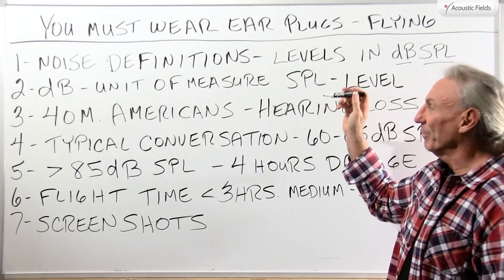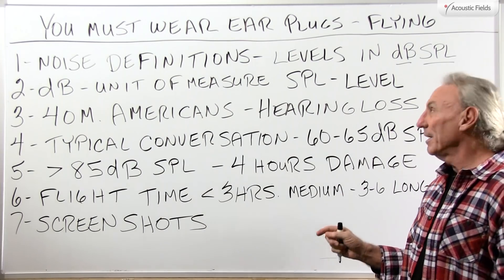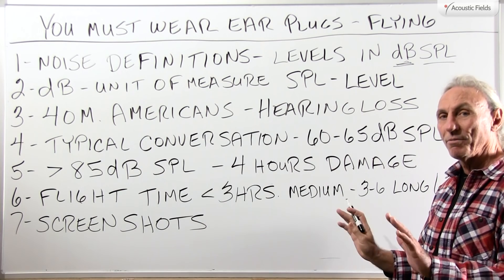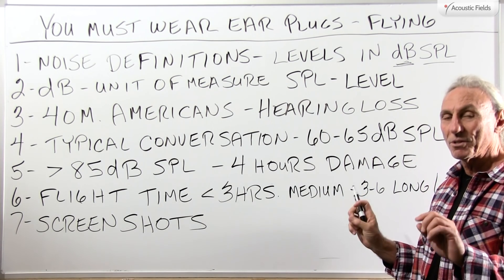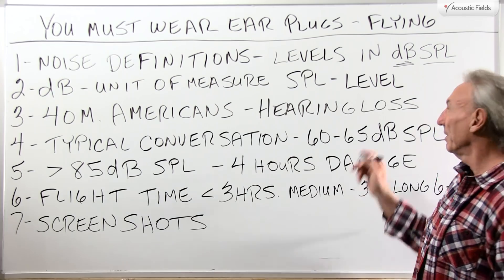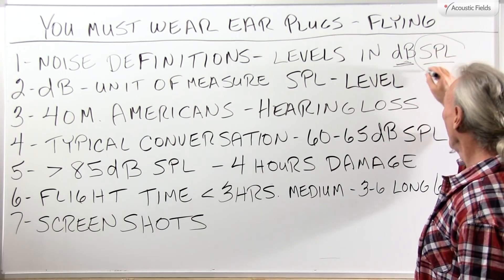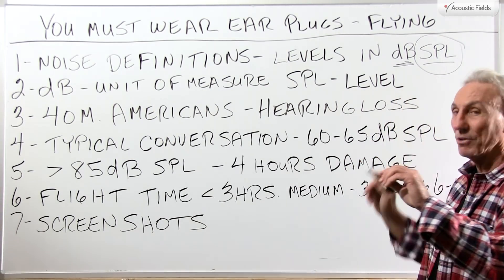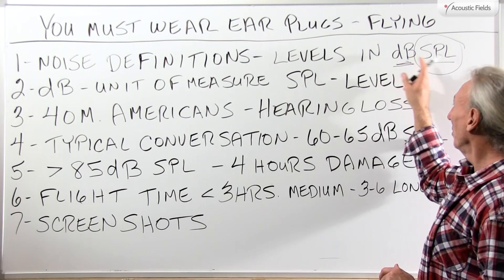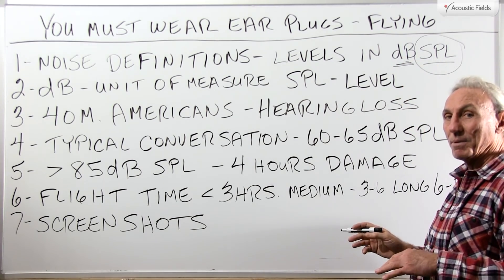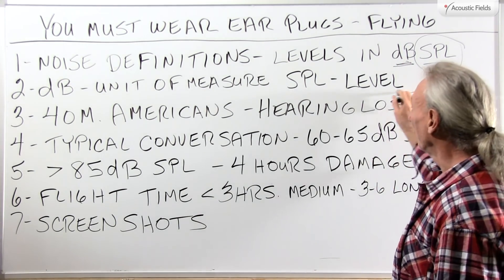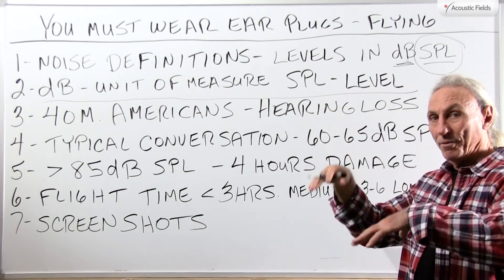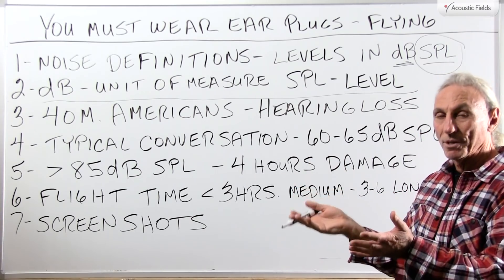Noise definitions. We're going to measure noise in dBs — decibels. It's a unit of measure. Let's just all agree that that's the level we're going to use. Sound pressure level is just that — a level of sound pressure measured in decibels. You always want to express it in dB SPL. That's the technical way to do it. dB is the unit of measure and SPL is the level of those units — how many of those units to a point.